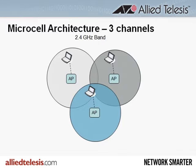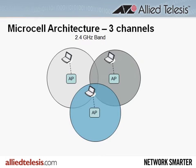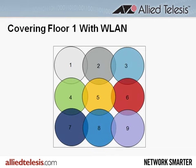So in theory, with this architecture, there would be several wireless LAN conversations happening in parallel, one per cell. Now, let's take this concept into the real world and cover the first floor of a school or office with wireless LAN. We'll need about nine cells. Looks good, right? Well, not in reality. At the wireless LAN frequency band of 2.4 GHz, there are only three non-overlapping channels: one, six, and eleven. So that means our nine-cell deployment actually looks like this.